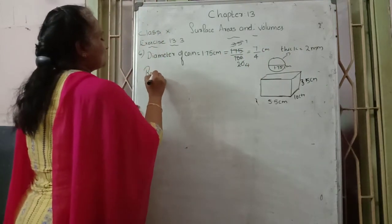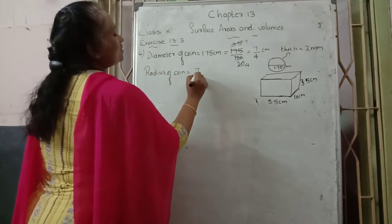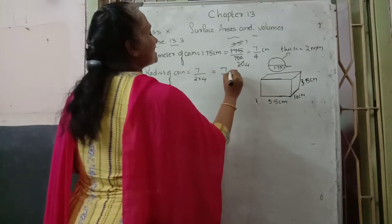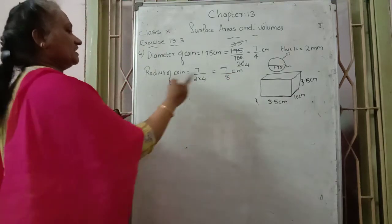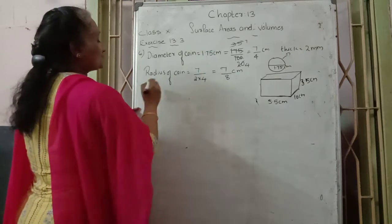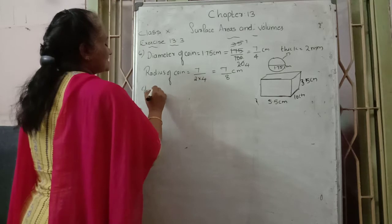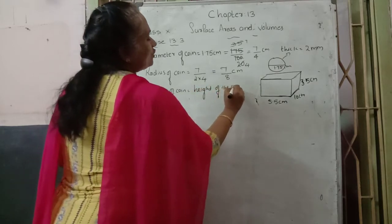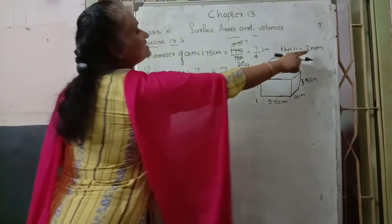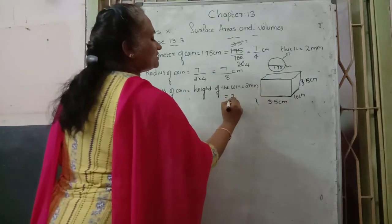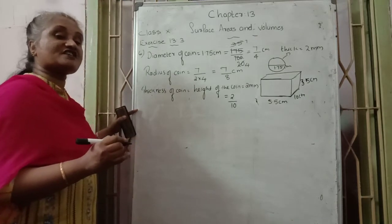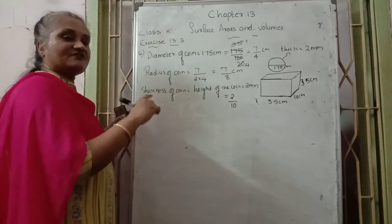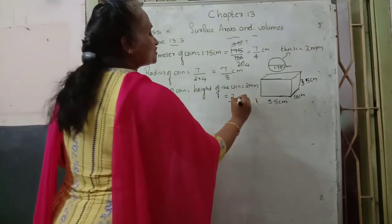Now we want to convert to radius. Radius of coin is equal to half of the diameter. So radius = (7/4) ÷ 2 = 7/8 cm. Next, thickness equals the height of the coin. Height is given as 2 mm. Since the remaining values are in cm, we convert: 1 mm = 1/10 cm, so height = 2/10 cm.